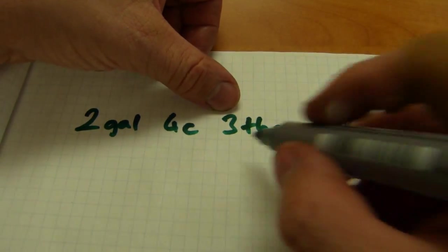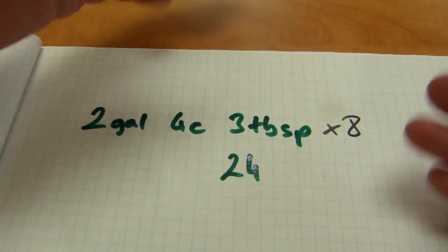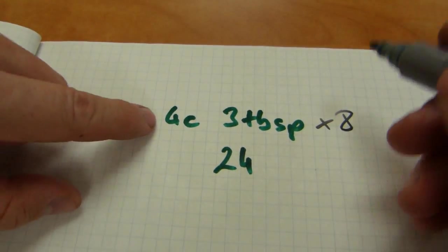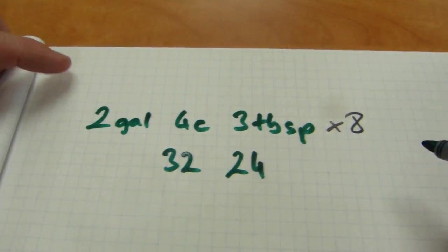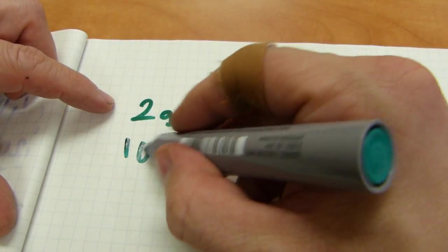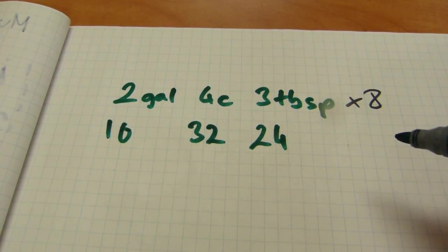So, three by eight is twenty-four. We write it in the tablespoon column somewhere here. Four by eight is thirty-two. And two by eight is sixteen.